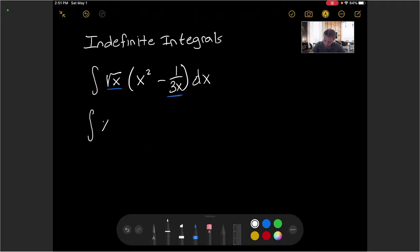This is x to the 1 half, and I'll do this twice, times x squared, and then we'll have minus 1 third. The constant stays as a 1 third, and this x is really raised to the negative 1 power. I'll just separate them like that. And again, we have the dx on the end.